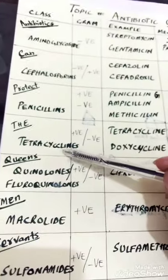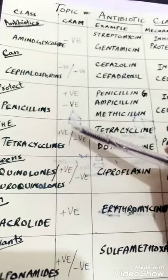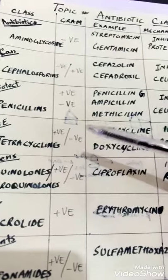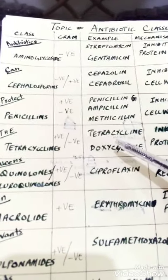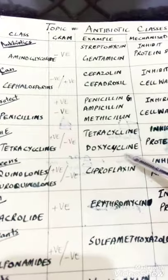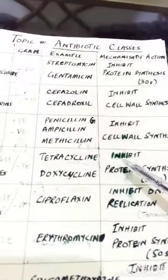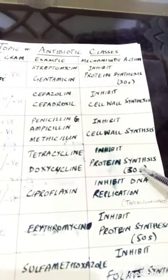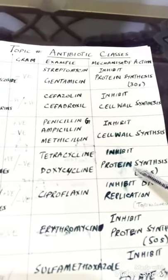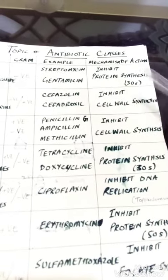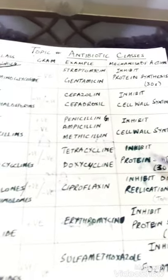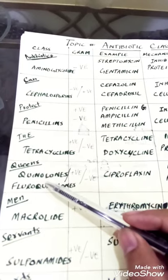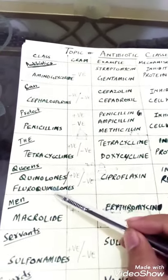The fourth class is tetracyclines, which can kill both gram-positive and gram-negative bacteria. Examples include tetracycline and doxycycline. They work by inhibiting protein synthesis at the 30S subunit of the ribosome — the same process as aminoglycosides.